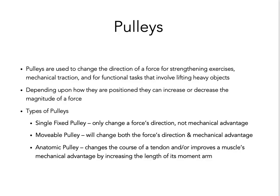Lastly, let's take a look at pulley systems. Pulleys are used to change the direction of a force for strengthening exercises, mechanical traction, and functional tasks involving lifting heavy objects. Depending on how they're positioned, they can increase or decrease the magnitude of a force. Types of pulleys: a single fixed pulley only changes a force's direction, not mechanical advantage; a movable pulley changes both force direction and mechanical advantage; and an anatomic pulley changes the course of a tendon and improves the muscle's mechanical advantage by increasing the length of its moment arm.